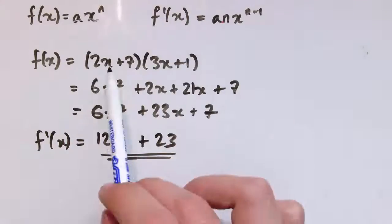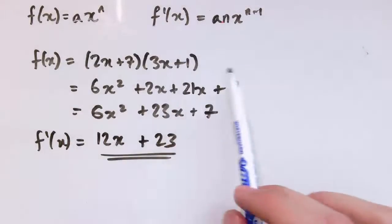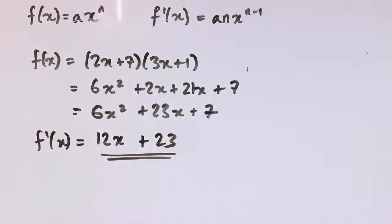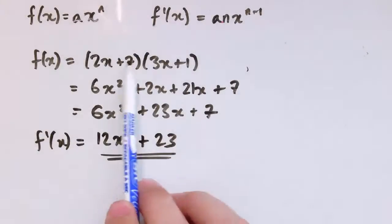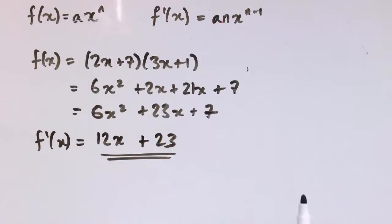And that would apply if we had other terms inside the brackets here, or if I had three brackets, I'd have to multiply them all out first and then differentiate them. There is something called the product rule, which I'll come on to later in the course, which would allow you to differentiate a product of things using a formula, but it's not just as simple as multiplying the derivatives together. It's something more complex than that.